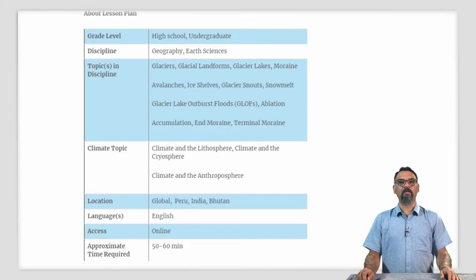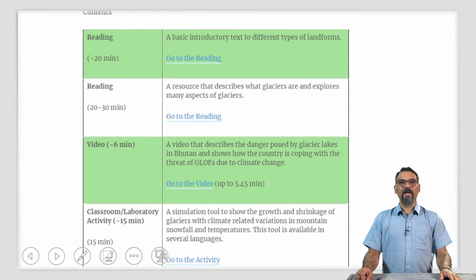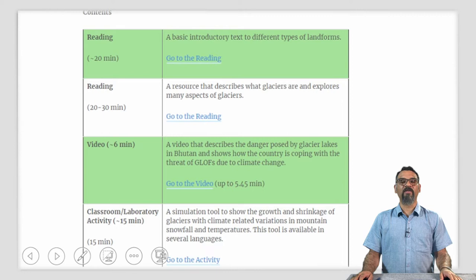This lesson plan includes a basic introductory reading introducing your students to different types of landforms. Another reading that describes what glaciers are and explores aspects of glaciers. A very short video — about 6 minutes in length — that describes the dangers posed by glacial lakes in Bhutan and shows how this country is coping with the threat of GLOFs due to climate change. A short classroom or lab activity to better engage with your students, which contains a simulation tool to show the growth and shrinkage of glaciers with climate-related variations in snowfall and temperatures.